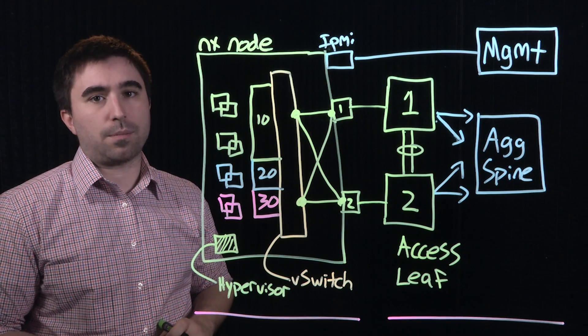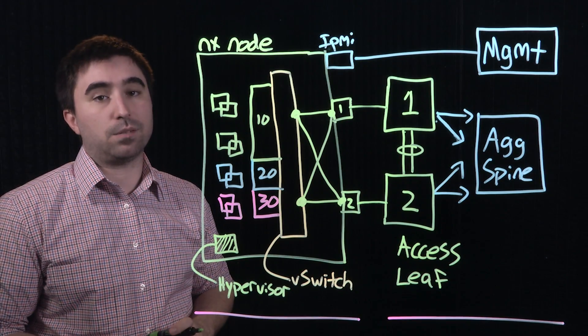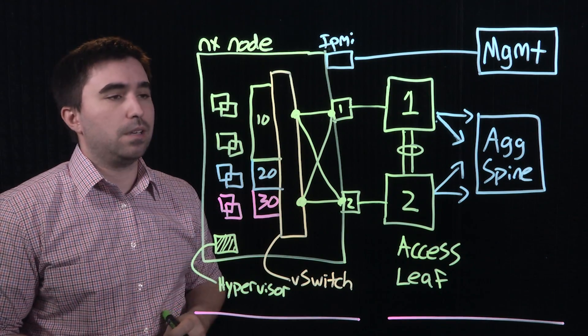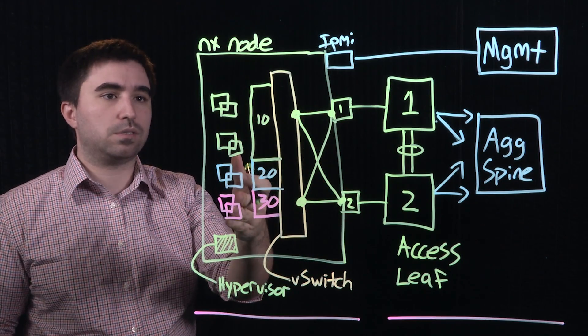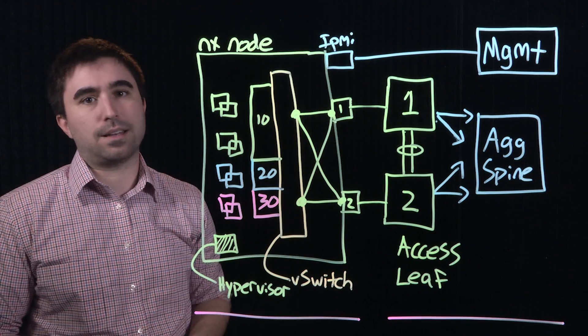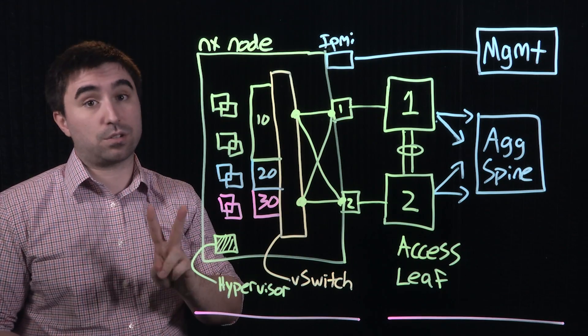Now, one very important topic is how redundancy is maintained within the virtual switching environment. This means that when one of these links goes away, how do these virtual workloads and applications stay connected to the network at large? Fundamentally, there are two options.